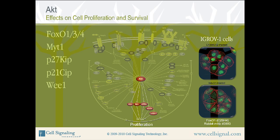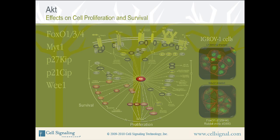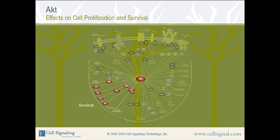AKT also promotes cell survival through phosphorylation and inhibition of a number of pro-apoptotic proteins. Targets in this group include BAD, BACS, BIM, FOXO1-3 and 4, and MDM-2.